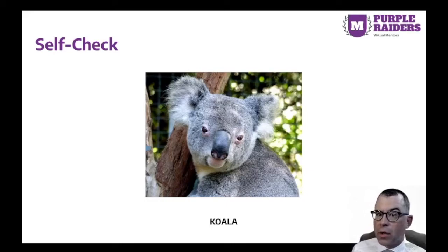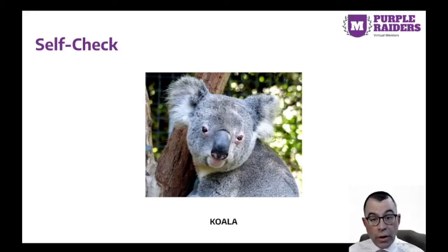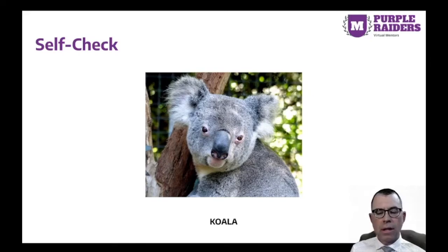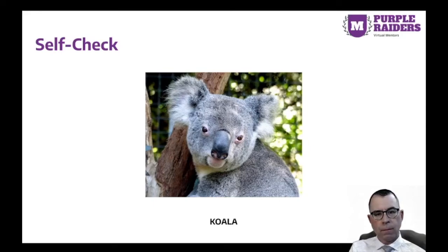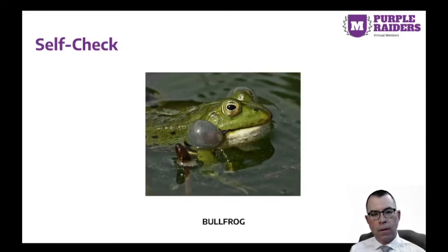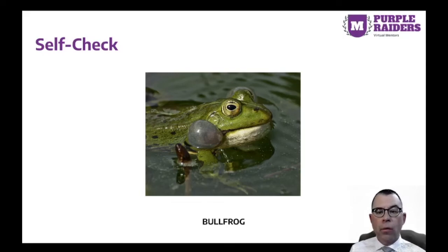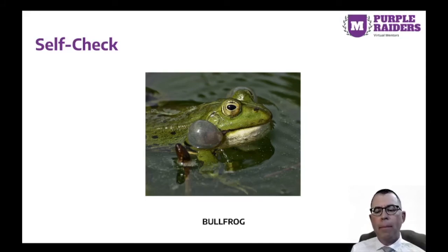Koalas are found in the eucalyptus forests of eastern Australia. When an infant koala, called a joey, is born, it immediately climbs into its mother's pouch. How would you classify a koala? Bullfrogs are the largest real frog found in North America. Bullfrogs need to live in water and are therefore usually found near some source of water like a lake, a pond, a river, or a bog. How would you classify a bullfrog?